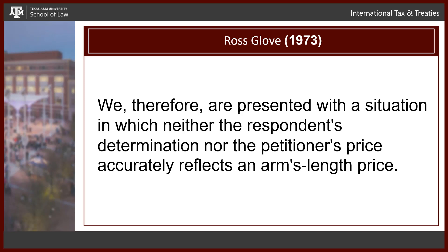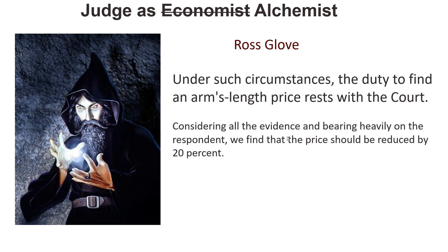That brings us to Ross Glove, 1973. The one quote I wanted to pull out: 'We therefore are presented with a situation in which neither the respondent's determination nor the petitioner's price accurately reflects the arm's length price.' So Ross Glove — the judge says both the treasury and the taxpayer are presenting such one-sided stories with such problems in the evaluation methods that: 'Under such circumstances, the duty to find an arm's length price rests with the court.' The judge is forced to go through the valuation method even though not an economist — so if not an economist, the judge is an alchemist.